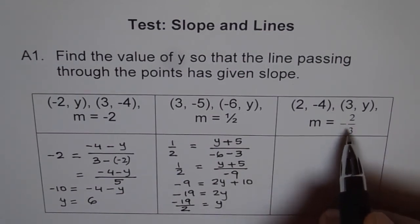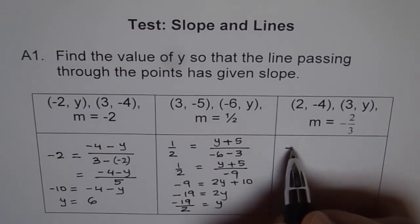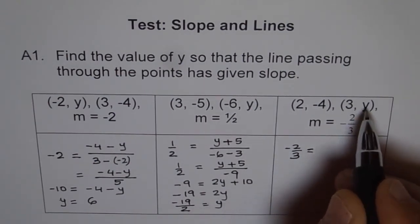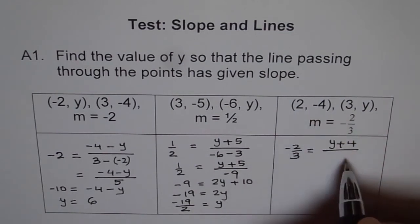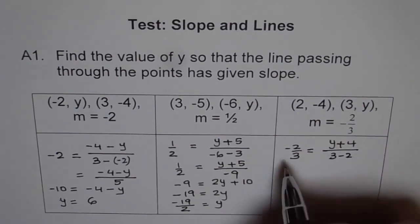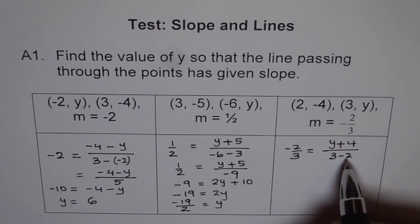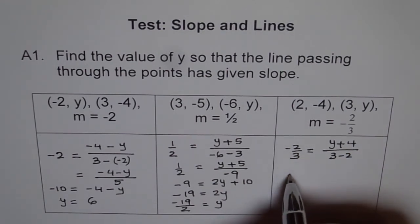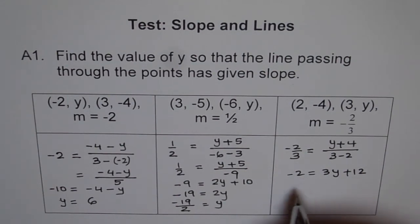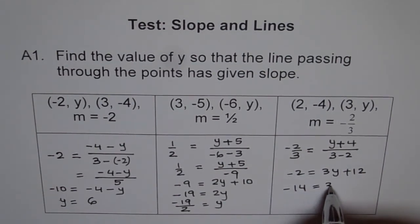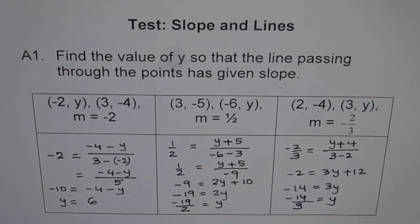Here I will just write the main statement and you can solve it yourself. So minus 2 over 3 is the slope, which should be equal to Y minus minus 4 over 3 minus 2. So Y minus minus 4 becomes plus, and 3 minus 2 is 1. Then cross multiply and solve for Y. We get minus 2 equals to 3Y plus 12. Take away 12 from both sides: minus 14 equals to 3Y, and Y equals to minus 14 divided by 3. Do such problems yourself and see how to find the coordinates of the point for a given slope.